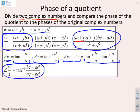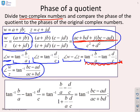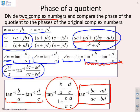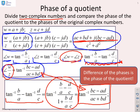Using the inverse tan addition rule, tan⁻¹(b/a) − tan⁻¹(d/c) can be written as tan⁻¹ of (b/a − d/c) / (1 + (b/a)(d/c)). Multiplying throughout by ac gives tan⁻¹((bc − ad)/(ac + bd)), which is exactly the same as the phase of w/z. So the argument of w minus the argument of z is the same as the argument of w/z. The difference in the phases is the phase of the quotient.